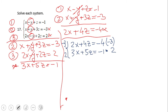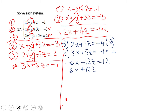We end up with negative 6x minus 12z equals 12, and 6x plus 10z equals negative two.